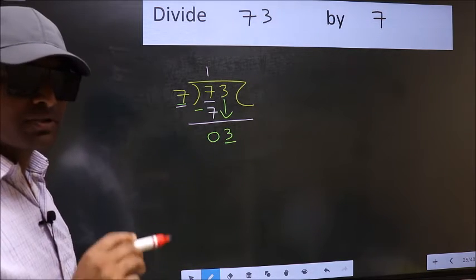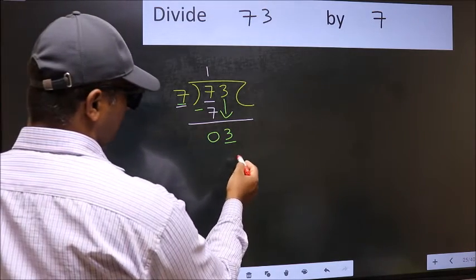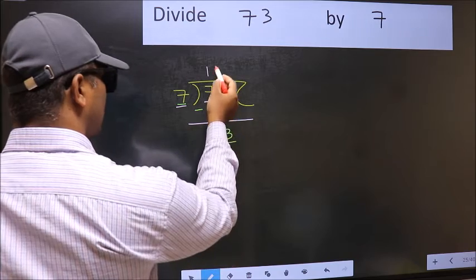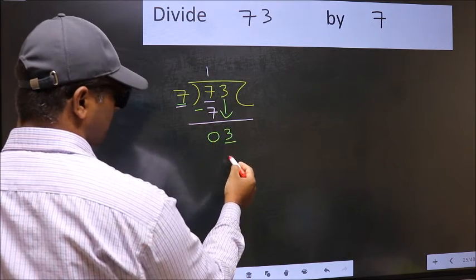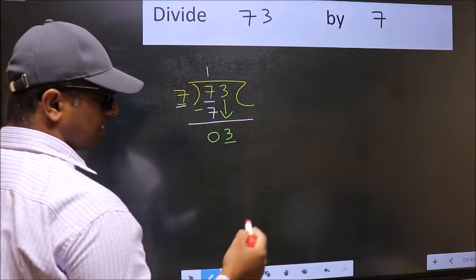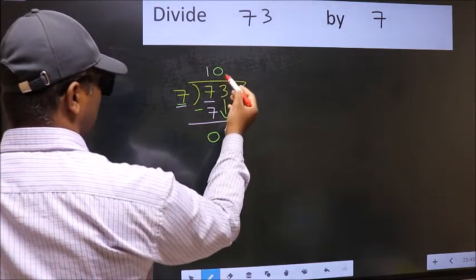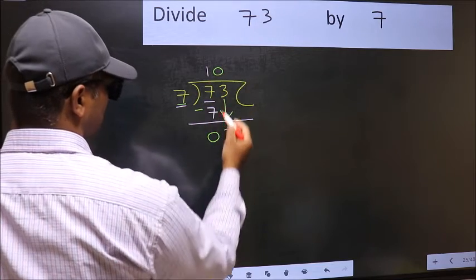Instead, what you should think of doing is: what number should we write here? If I take 1, we will get 7, but 7 is larger than 3. So what we should do is take 0. So 7 into 0 equals 0.